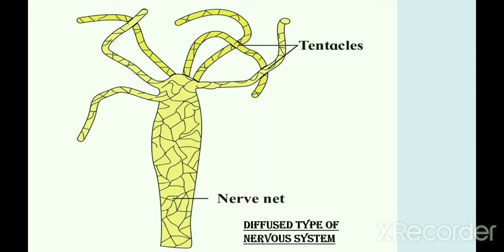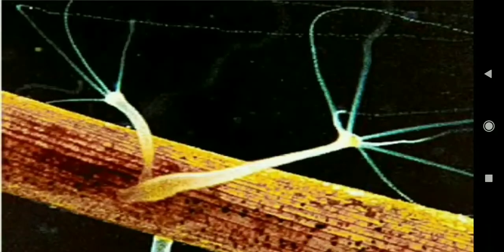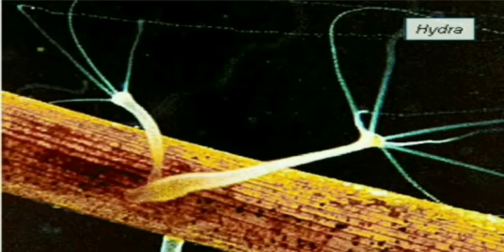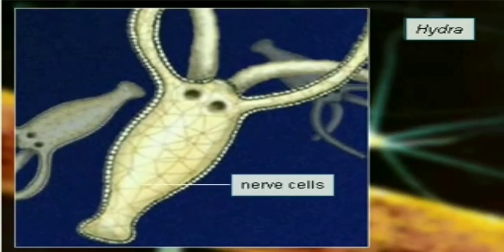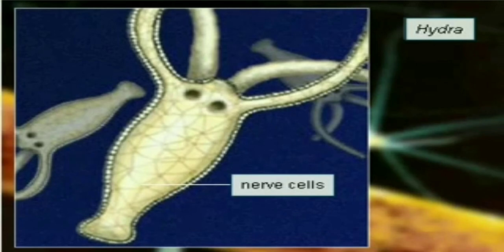This is a Hydra having nerve cells scattered throughout the body. They are interconnected to each other forming a nerve net. So it shows a diffused type of nervous system.